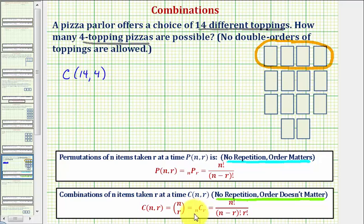Notice how there are several notations for a combination. Looking at our formula, notice n equals 14 and r equals four.